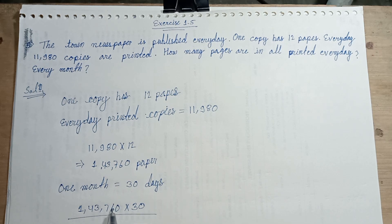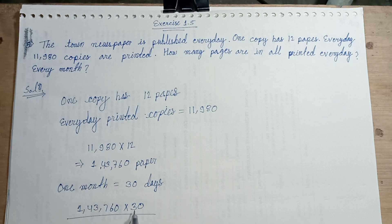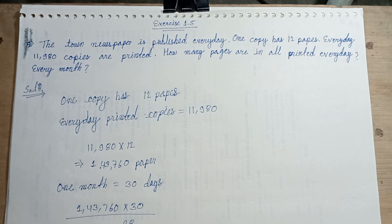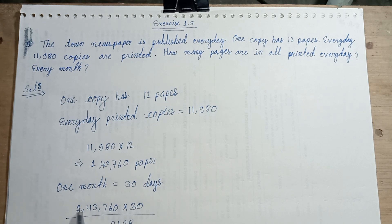3 multiplied with 6 is 18, carry 1 and 8. Then 3 multiplied with 7 is 21, plus carry 22, carry 2. Then carry 1, and 13, carry 1.